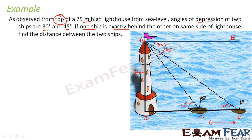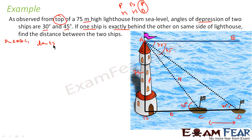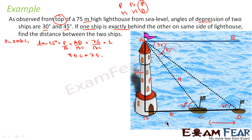In triangle ABC, with C as the frame of reference, AC becomes the hypotenuse, AB the perpendicular, and BC the base. Since I need to find BC, I'm dealing with perpendicular and base, which is tan. So tan 45° = AB / BC. Here AB is 75 and BC is what we need to find. Tan 45 is 1, so BC = 75 meters.